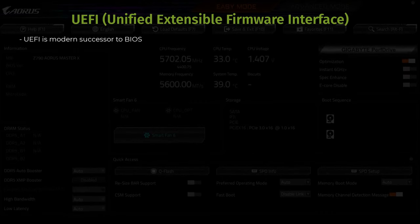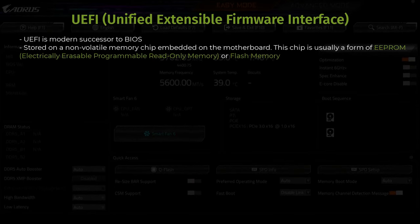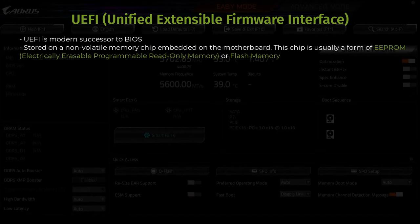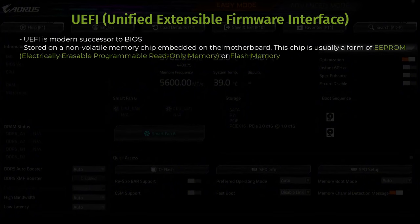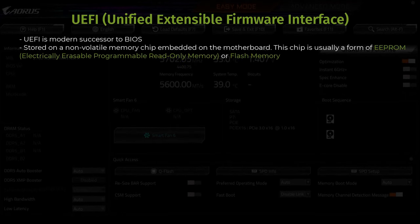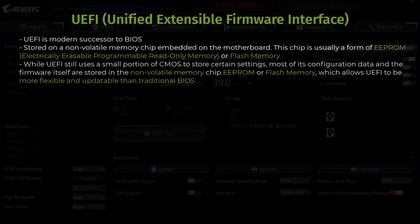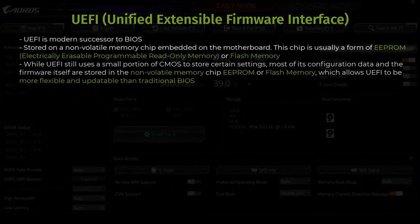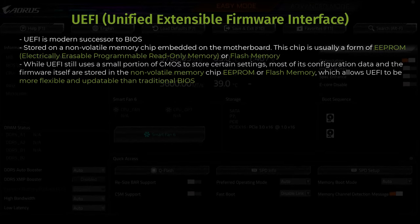Where is UEFI stored? Just like BIOS, UEFI firmware is stored on a non-volatile memory chip embedded on the motherboard. This chip is usually a form of EEPROM, electrically erasable programmable read-only memory, or flash memory, which can be updated with new firmware versions. This chip is commonly found near the CPU or memory slots. While UEFI still uses a small portion of CMOS to store certain settings, most of its configuration data and firmware are stored in EEPROM or flash memory, making it more flexible and updateable than traditional BIOS.